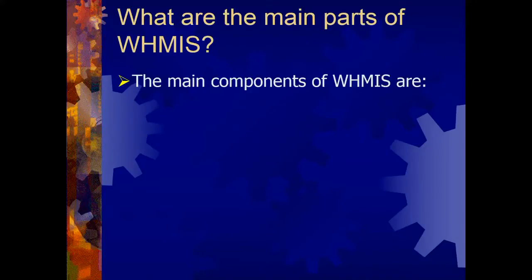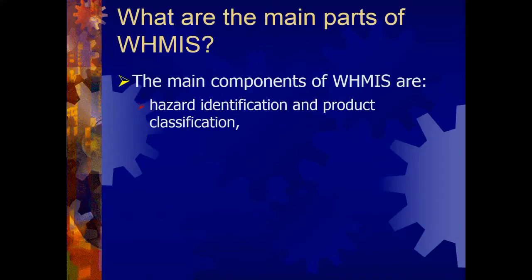WHMIS has four main components. The first is identifying the hazard and classifying the product according to the potential danger it presents. It's quite possible that a given product can be hazardous in more than one of the WHMIS categories, and this would have to be reflected in how it's identified.